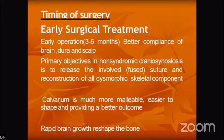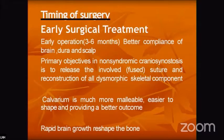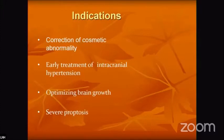Early surgical treatment between three to six months of age provides better compliance of brain, dura, and scalp. The primary objective in non-syndromic craniosynostosis is to release the fused suture and reconstruct all dysmorphic skeletal components. The calvarium is more malleable and easier to shape at this age, providing better outcomes. Rapid brain growth then reshapes the bone. Indications for surgery include cosmetic correction, treatment of intracranial hypertension, optimizing brain growth, and severe exophthalmos.